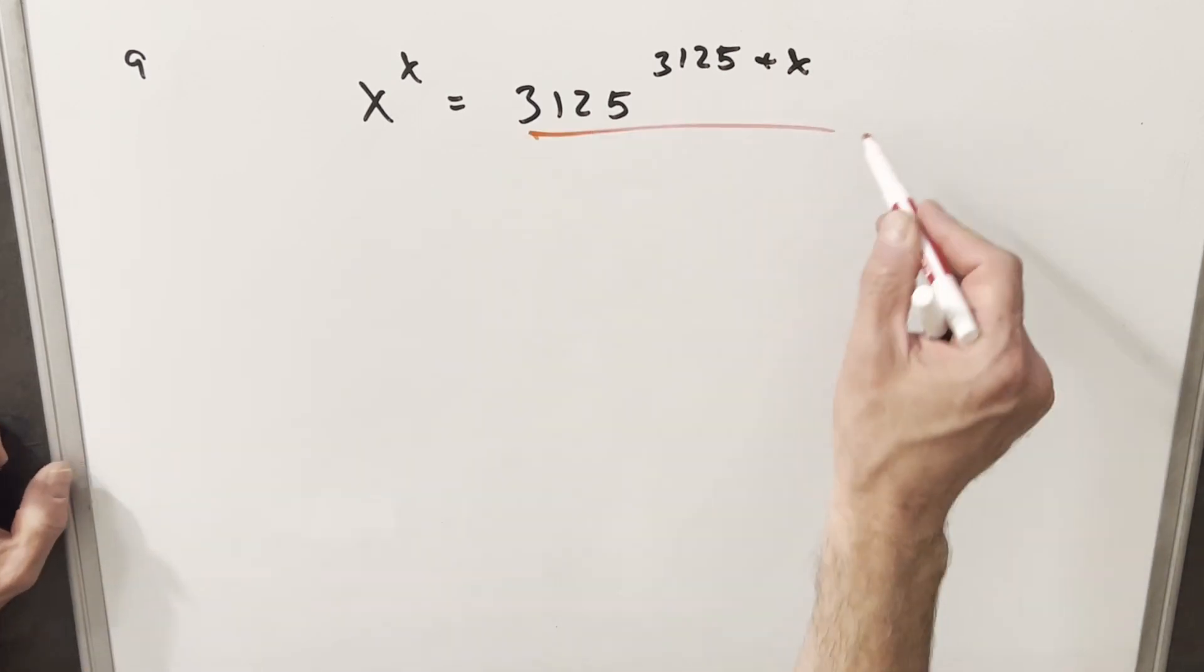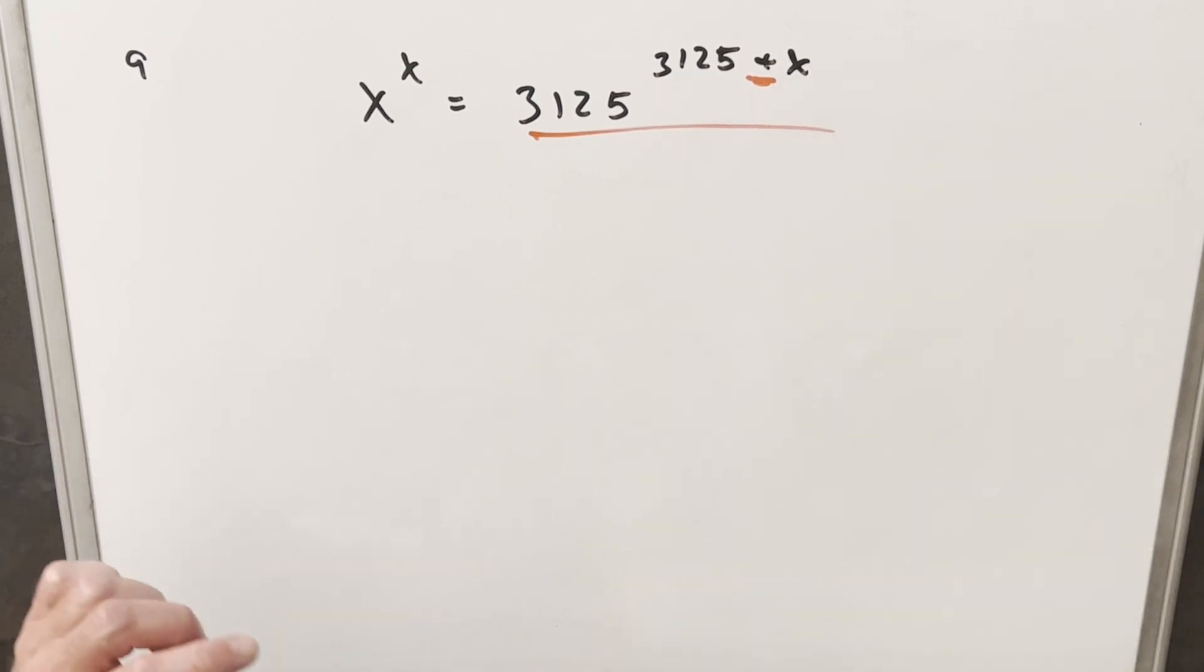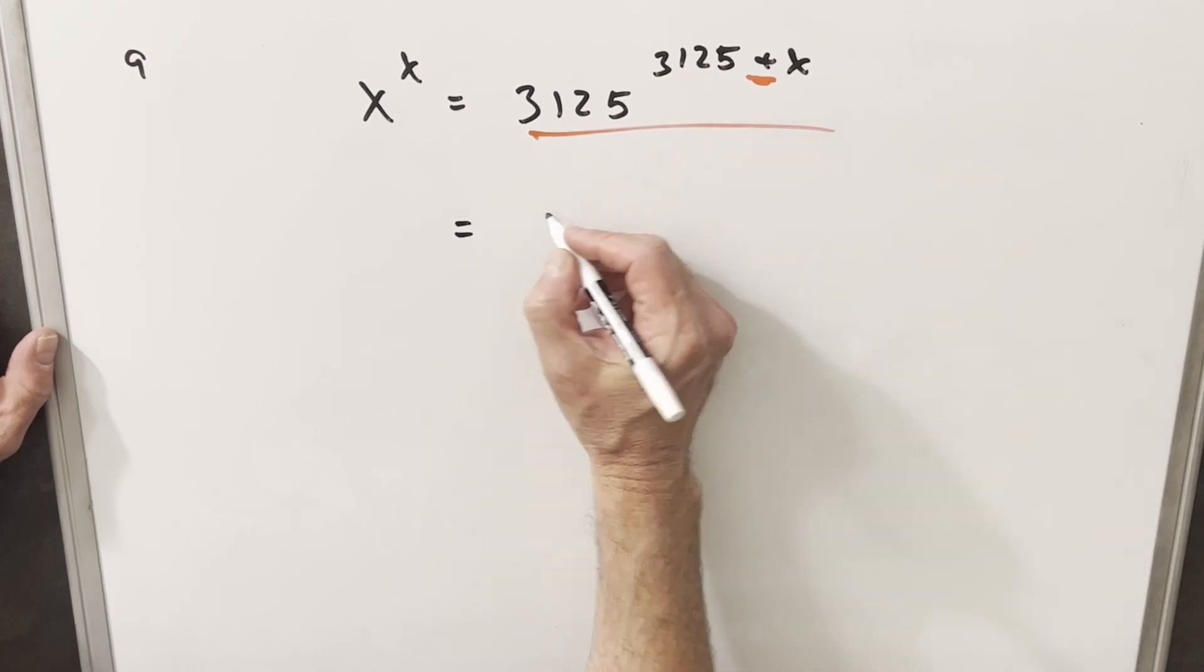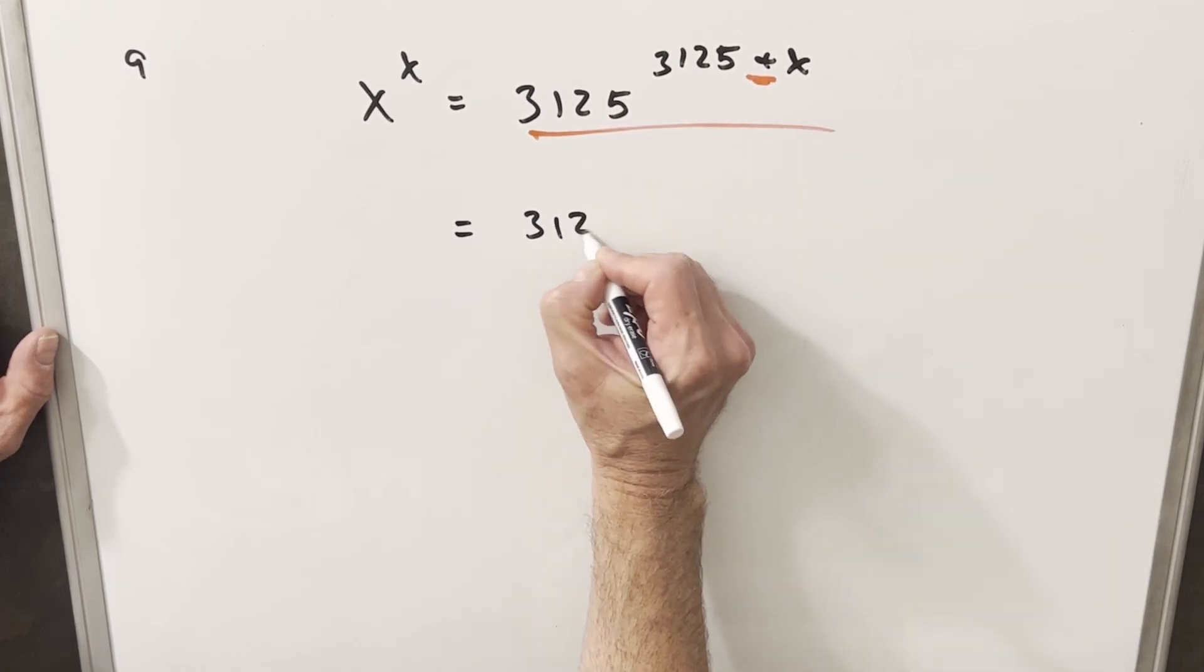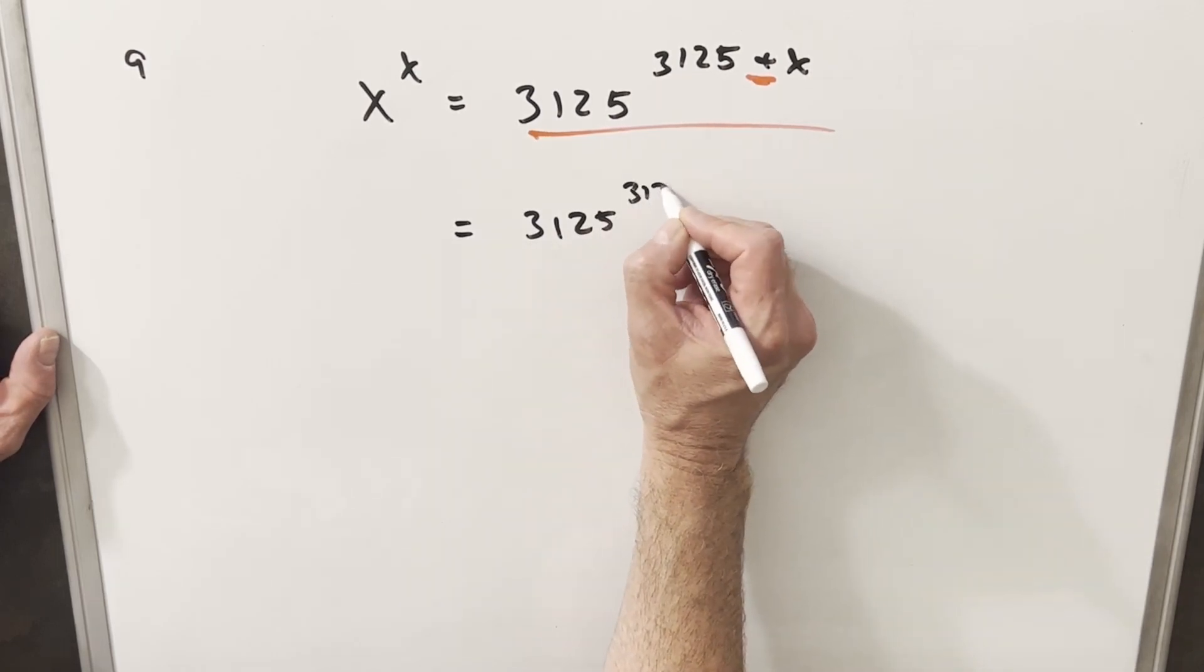To start what I'm going to do is focus on the right side, and particularly this plus sign. And what I'll do is let's just rewrite this and turn this into a multiplication so I can write this as 3125 to the 3125 times 3125 to the x.